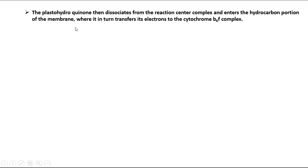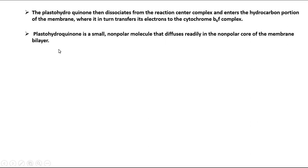The plastohydroquinone then dissociates from the reaction center complex and enters the hydrocarbon portion of the membrane, where it transfers its electrons to the cytochrome B6F complex. Plastohydroquinone is a small, nonpolar molecule that diffuses readily in the nonpolar core of the membrane bilayer.